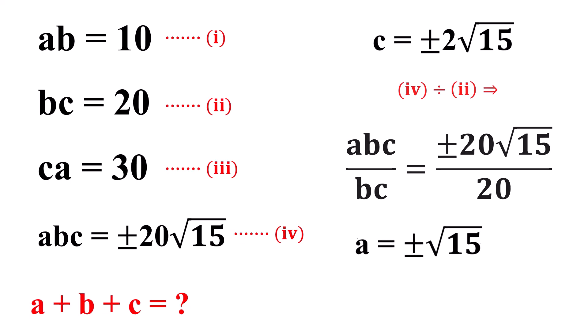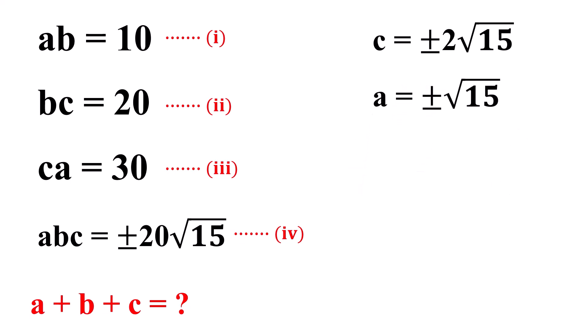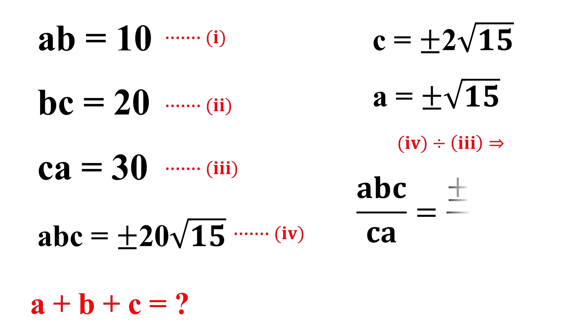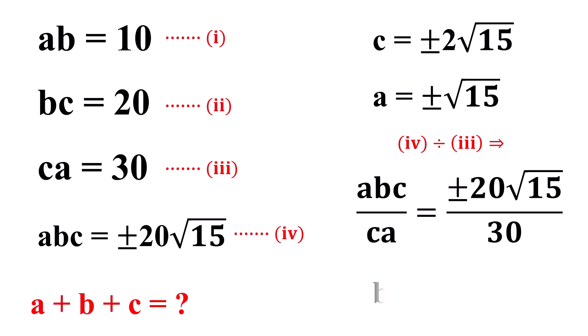Finally, dividing equation 4 by equation 3, we get ABC over CA equals plus or minus 20 times the square root of 15 over 30. Or, the value of B equals plus or minus 2 times the square root of 15 over 3.